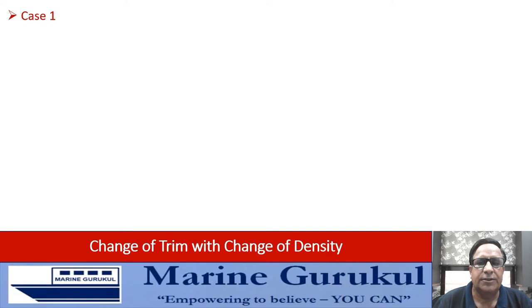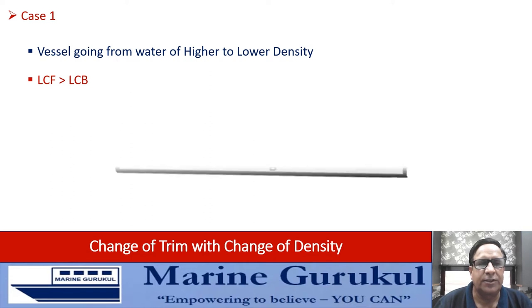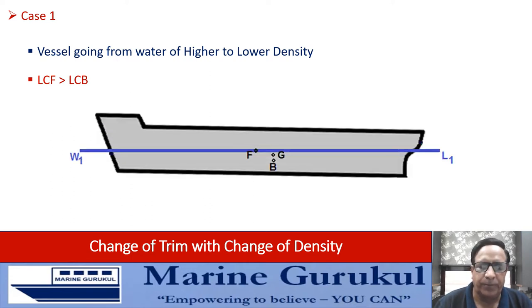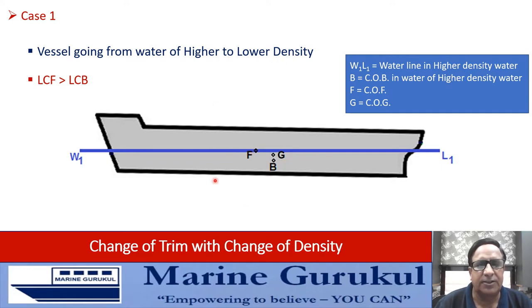Let us consider a simple case scenario. We have a vessel going from water of higher density to lower density, and the ship's LCF is greater than LCB. The vessel is floating at waterline W1L1 in higher density water. B is the center of buoyancy; since LCB is less than LCF, the center of flotation is forward of B. In static equilibrium, G is vertically above B.